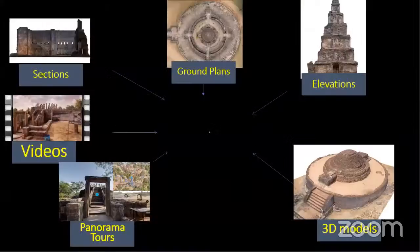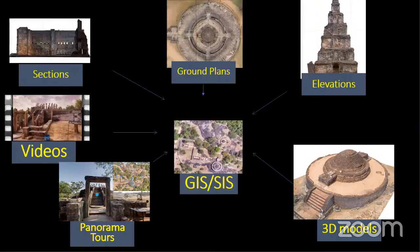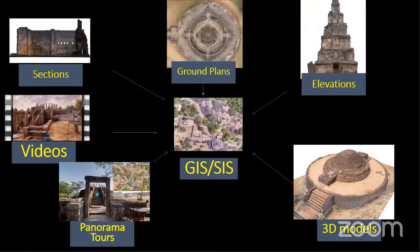In terms of spatial data types, we produce sections through architectural structures, ground plans, elevations, videos, panorama tours, and 3D models — all examples from Sri Lanka. We combine all of these in geographic information systems, or as I prefer to call them, site information systems. All the data are linked through the information system and can be accessed accordingly.